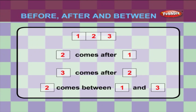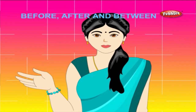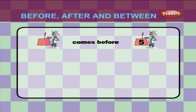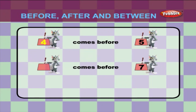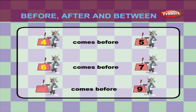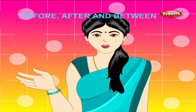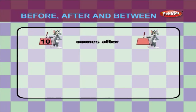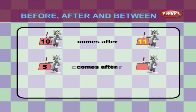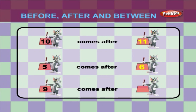Two comes between one and three. Now, let us try some examples for before numbers. What comes before five? Four. What comes before seven? Six. What comes before nine? Eight. Let us try some examples for after numbers. What comes after ten? Eleven. What comes after five? Six. What comes after nine? Ten.